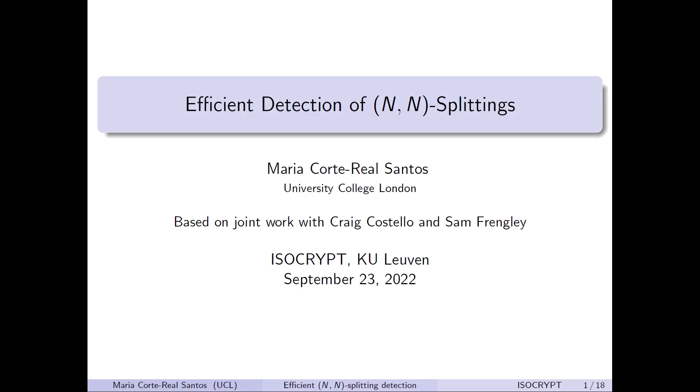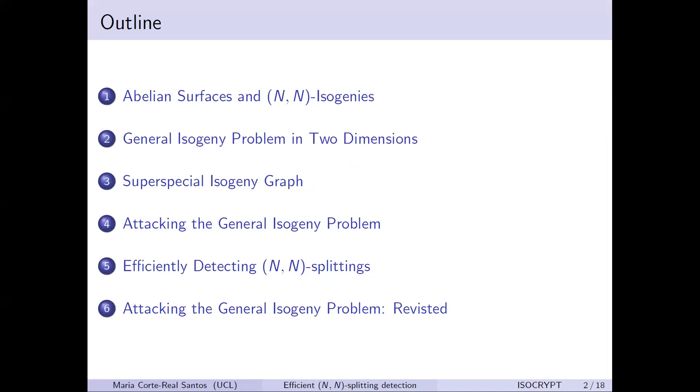I'll be talking about detecting NN splittings, based on joint work with Craig Costello and Sam Frangley. The paper will be out soon. We started working on this problem a couple of months ago, and we have a different application for it where we use it to speed up the attack against the Dimension 2 isogeny problem. I'll first talk about abelian surfaces, give a brief recap, then talk about the isogeny problem in two dimensions, introduce the graph, introduce the best attack against it, and then talk about how we can detect NN splittings and apply this to attacking the isogeny problem.